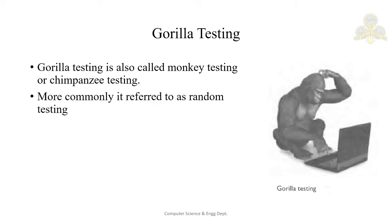To perform gorilla testing, you act as a gorilla and randomly press keys on the keyboard, checking whether the software fails, hangs, or crashes. If wrong inputs are given, necessary error messages must be displayed; if the system hangs or crashes, that is a major defect and error handling routines need improvement. Gorilla testing is highly beneficial for game software — it simulates a child randomly pressing keys. Any software that passes gorilla testing can be considered a high quality product.